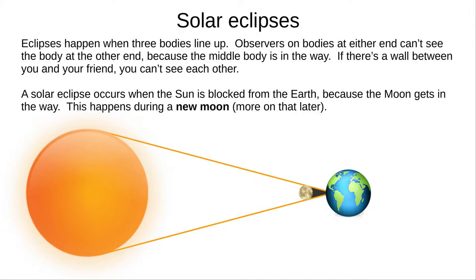An eclipse happens when three astronomical bodies line up, such as the Earth, the Moon and the Sun. The middle body can block the two end bodies from seeing each other, just as you can't see your friend from behind a wall.